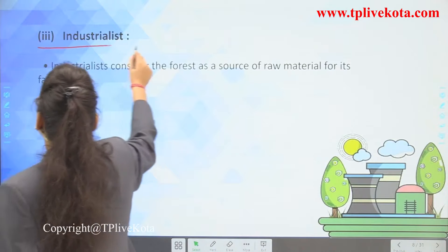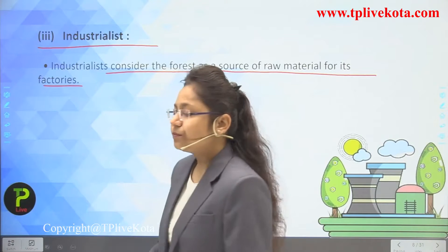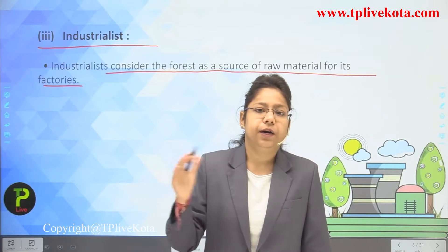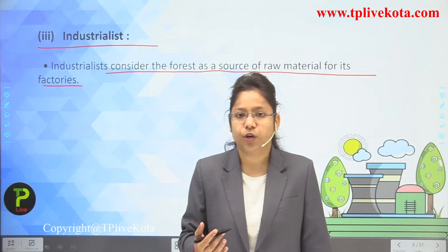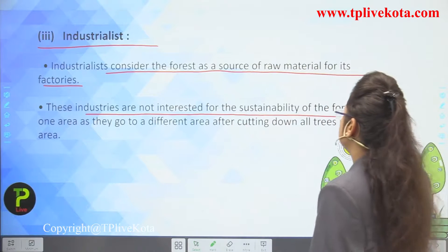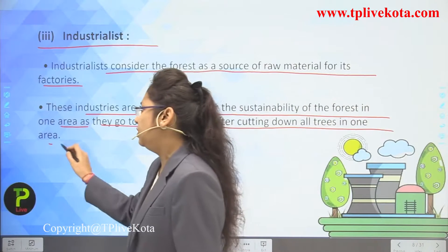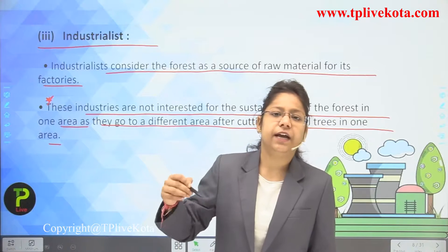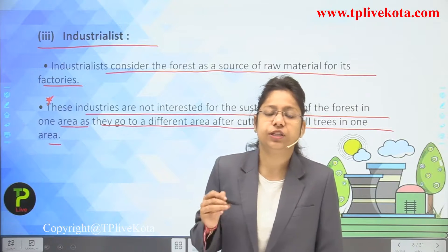The third stakeholder is industrialists. They consider the forest as a source of raw material for their factories — they get large amounts of wood, burn it, and produce heat to make raw materials. These industries are not interested in the sustainability of forest in one area; they move to different areas after cutting down all the trees, which is a very bad condition occurring in our country.